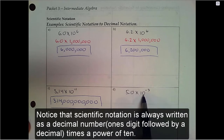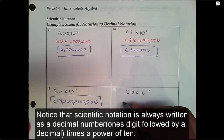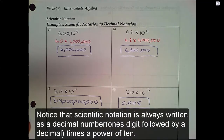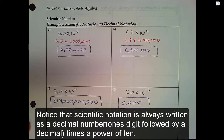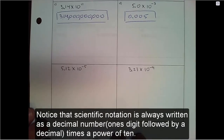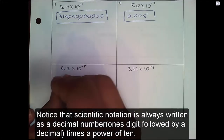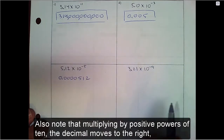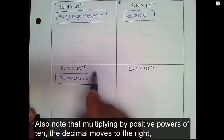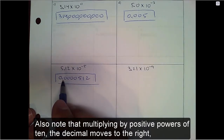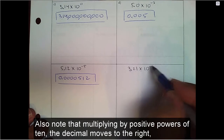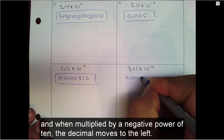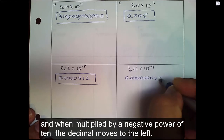Notice that scientific notation is always written as a decimal number — the ones digit followed by a decimal — times a power of 10. Also note that multiplying by positive powers of 10, the decimal moves to the right. And when we multiply by a negative power of 10, the decimal moves to the left.